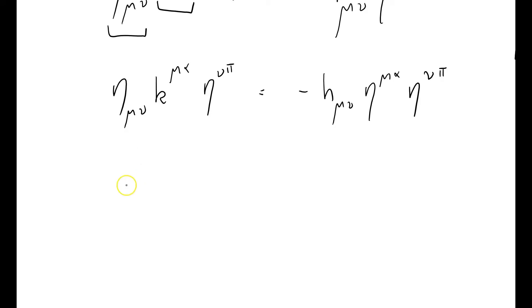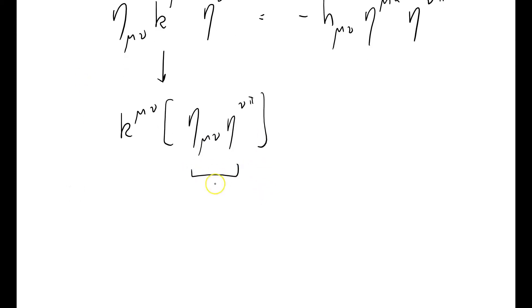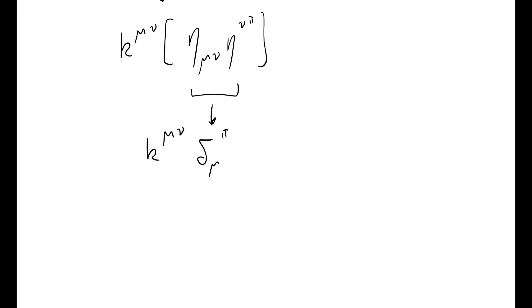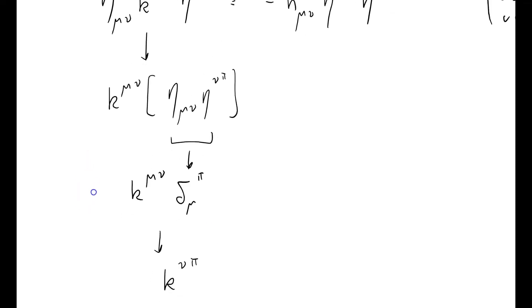So what have I got here? I've got this thing is K mu nu times eta mu nu eta nu pi. And this thing, of course, is going to be a Kronecker delta. The nu's are summed over mu pi times K mu nu. And by the brilliance of Kronecker delta, Kronecker delta picks out just the term where mu equals pi, so this thing altogether is equal to K mu pi. That's the left-hand side.